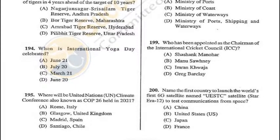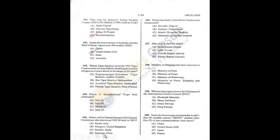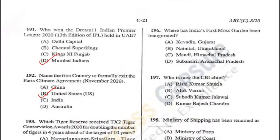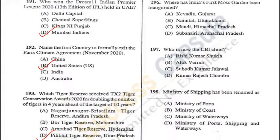Question 195: COP26 is going to be held in Glasgow, UK — B is the answer. Q194 = A, Q193 = D. Question 196: Where is India's first moss garden? It is in Nainital, Uttarakhand — B is the correct answer. Question 197: New CBI chief is Subodh Kumar Jaiswal — C is the correct answer.